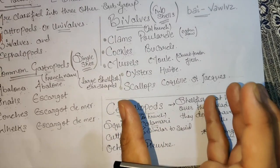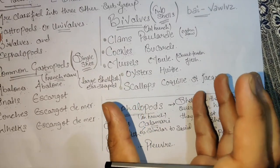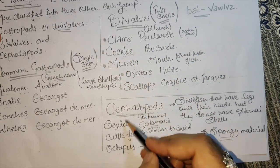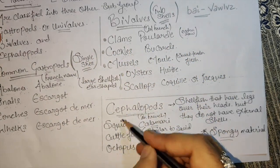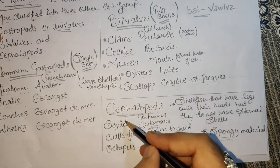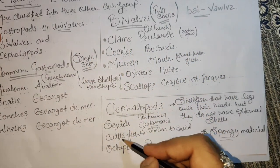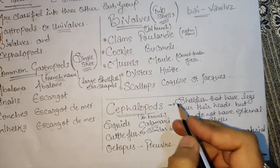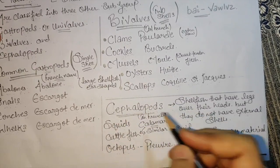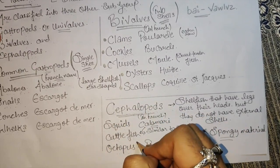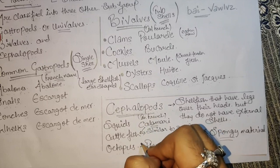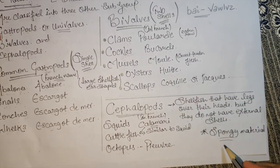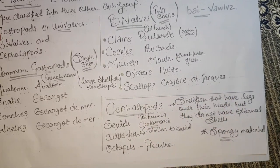Cephalopods have a bulky kind of head and the rest are legs — you can say multi-legs. So here we count the legs. Cephalopods are like spongy material inside.